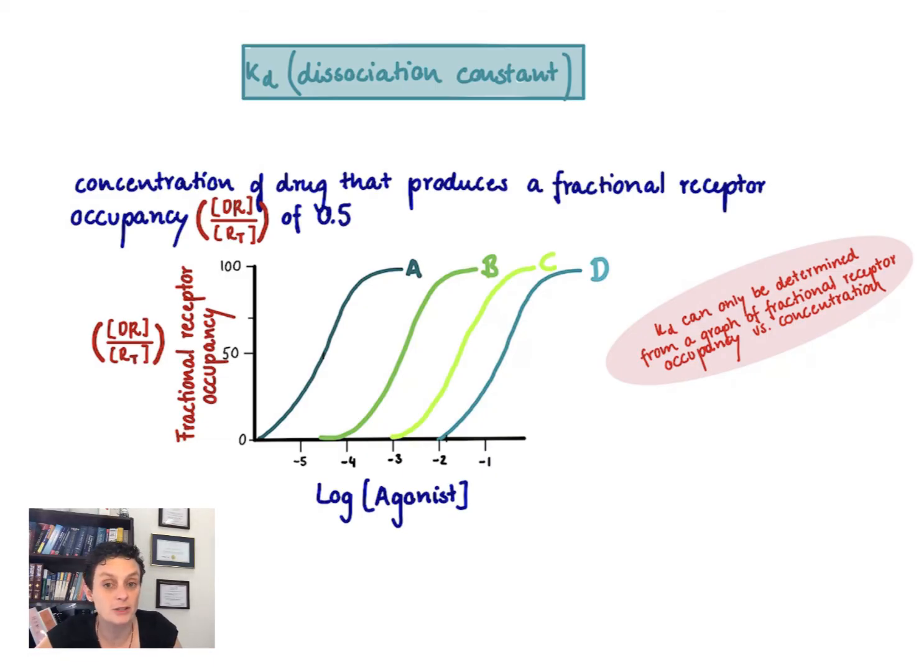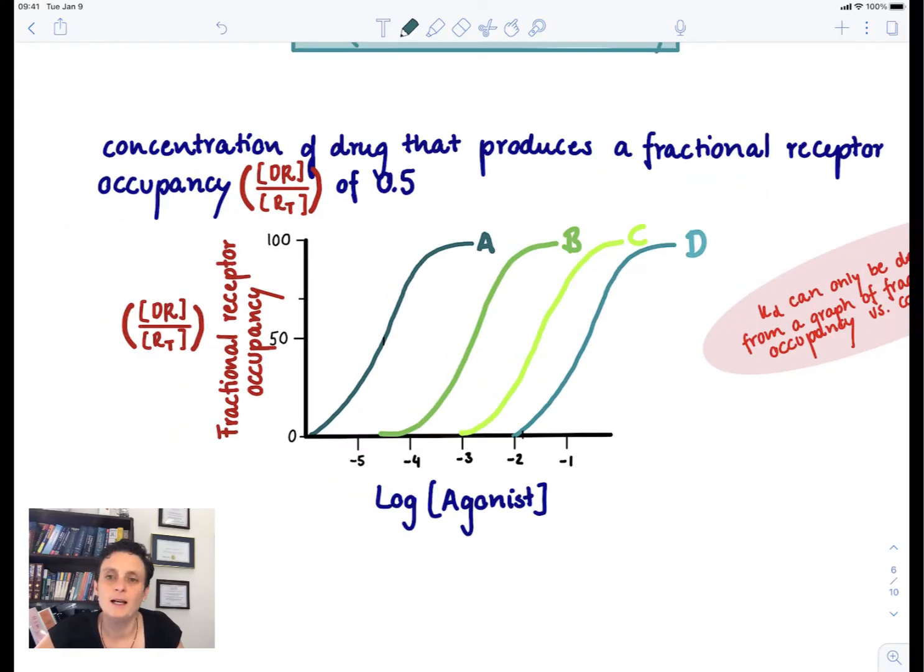Let's try this out and determine the KD of different drugs here. Let's use as an example drug A. So what concentration do I need that 50% of the receptors are occupied?